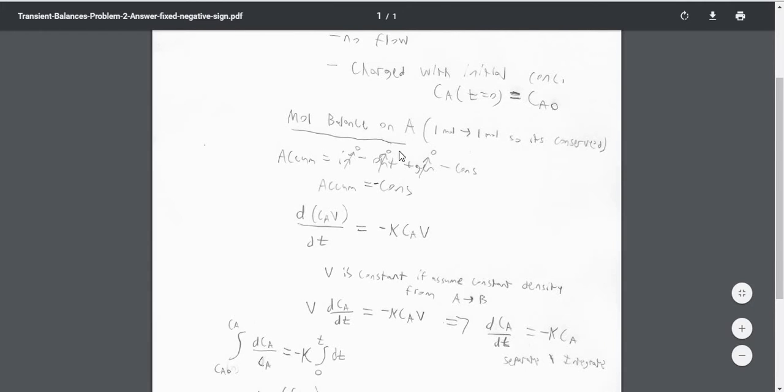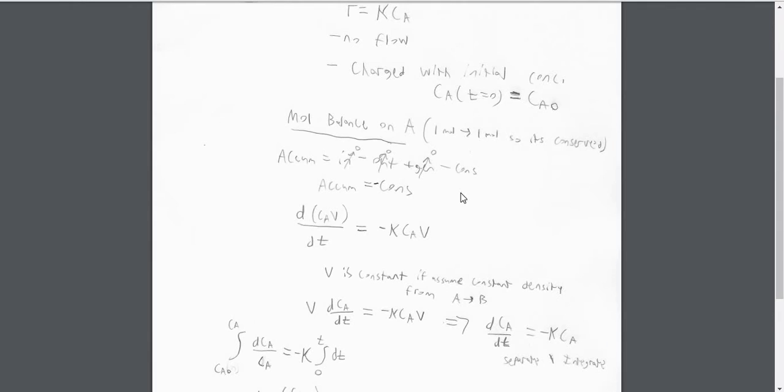There's no A in, there's no A out because of the closed system. There's no A that's generated, but A is consumed. So accumulation is equal to negative consumption in this case.